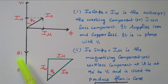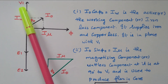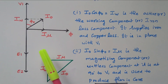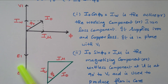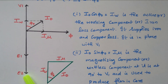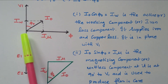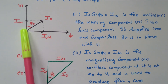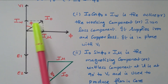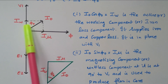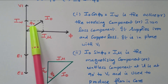The induced EMFs E1 and E2 are opposite to V1 because, based on Faraday's law and Lenz's law, the induced EMF opposes the flux producing it — so it is available in the opposite direction. The magnetizing current is in phase with the flux, the working current is in phase with the voltage, and the vector sum of these two is I0, with a phase angle of phi0 between I0 and V1.